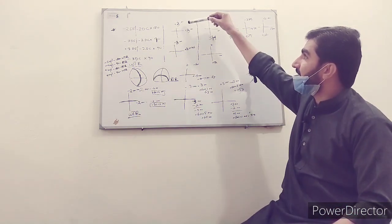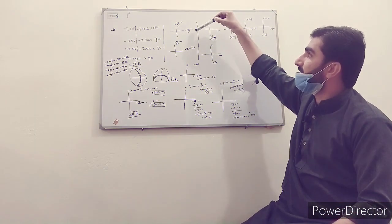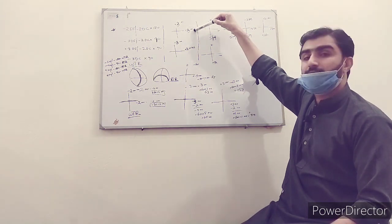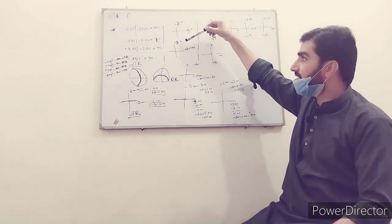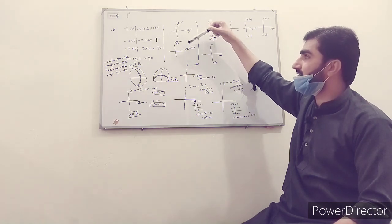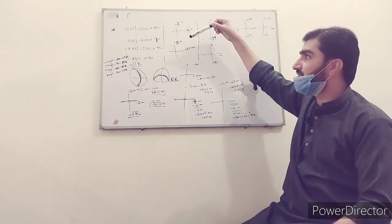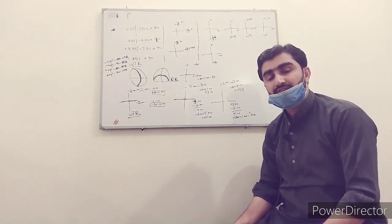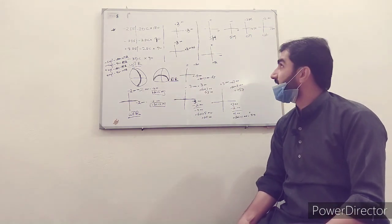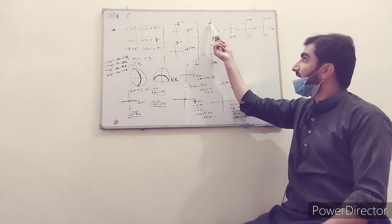For example, if power at the vertical meridian is +3 and power at the horizontal meridian is also +3, this is not astigmatism. But if power at the vertical meridian is +3 and power at the horizontal meridian is +2, the power is different — this is astigmatism. Now I will explain the classification of astigmatism.